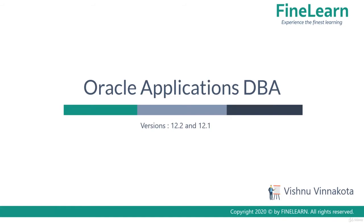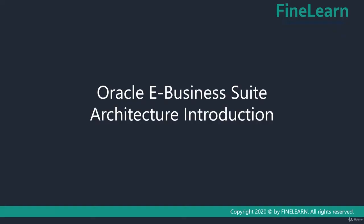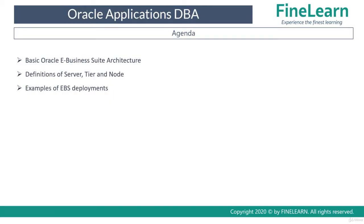Hi. In this lesson, we will see the basics of Oracle eBusiness Suite architecture. First, we will see what is the eBusiness Suite 3-tier architecture. Then, we will see the definitions of server, tier and node. These three definitions are very important to understand in detail about the architecture of eBusiness Suite. Then, we will see some of the real-time deployments of Oracle eBusiness Suite.